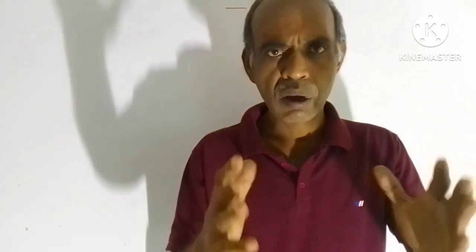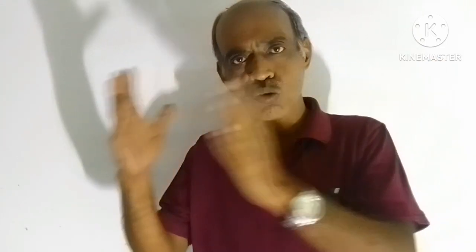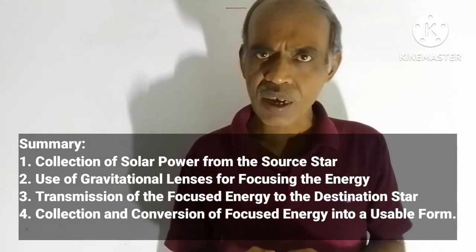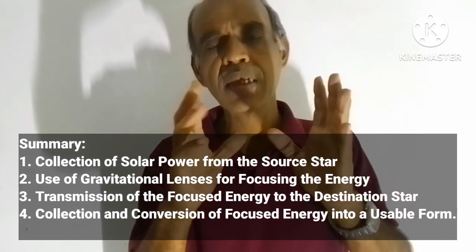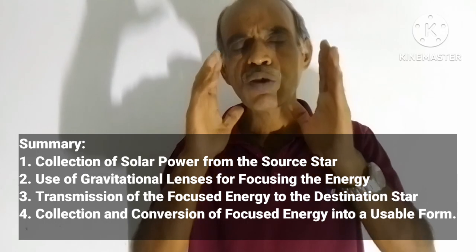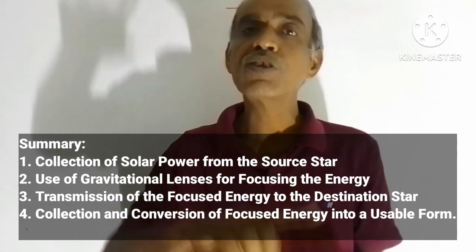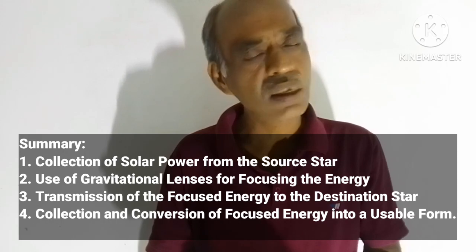This was all about the concept covered in this video: how to use gravitational lenses to transmit power from one star to another. In summary: step one is collection of the radiation from the source star; step two is using gravitational lenses to focus the energy into a concentrated light beam; step three is transmission of that energy to the destination star; and step four is conversion of that concentrated energy into a usable form.